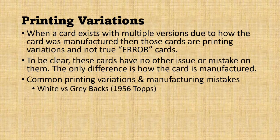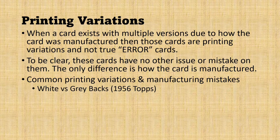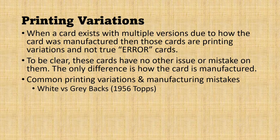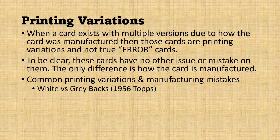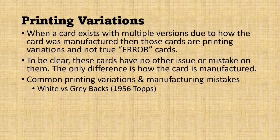You can also include other variations such as the red and black backs in '52 Topps, the yellow letter and white letter versions in '58 Topps, and the '62 Topps green tint cards. Those are all printing variations because the printer either made a mistake in the card stock they used, ran out of one and used another, or just didn't change the color in the ink properly and had different color cards. They're not errors, they're just variations.